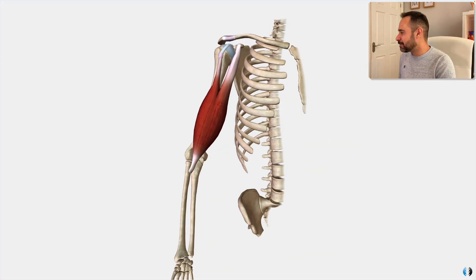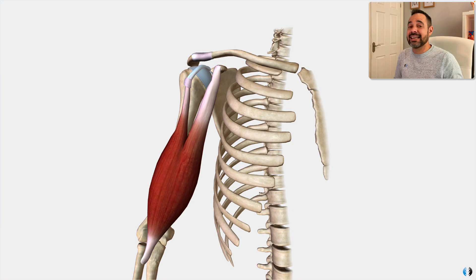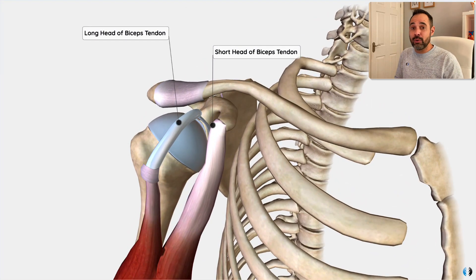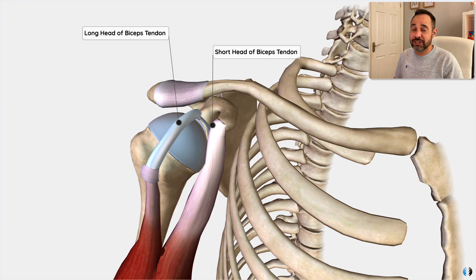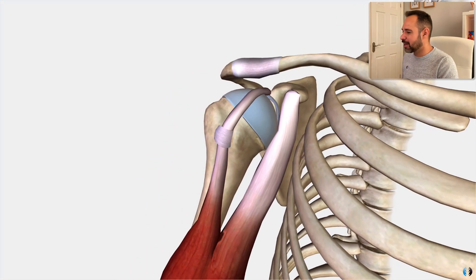Here is the biceps brachii muscle. The name 'biceps' indicates that this muscle has two heads — a long head and a short head. In this video we're talking about ruptures to the long head of biceps tendon. We actually very rarely get short head ruptures, and that also goes for other pathologies in general. So let's take a closer look at this long head of biceps tendon.